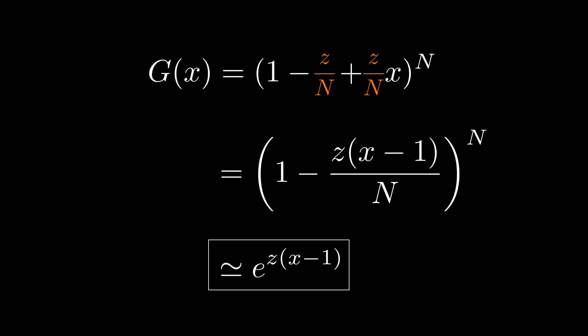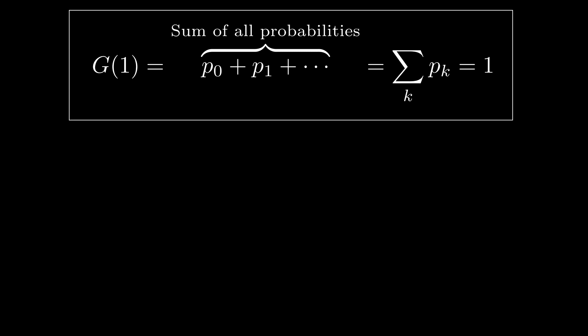But we should wonder, can this function still be a generating function? It is now an exponential function, not a polynomial function. Well, let's see whether it behaves like a probability generating function. For instance, we saw that if we plug 1 into x, then the summation becomes just a sum of all probabilities, and the generating function becomes just 1. Does it hold in this case? Let's try that. Yes, it works.